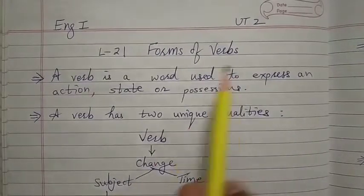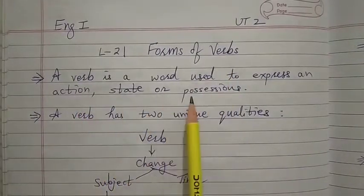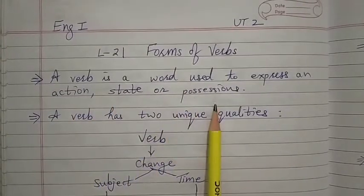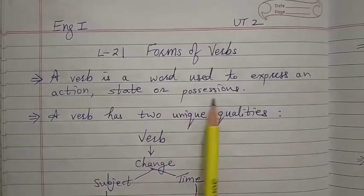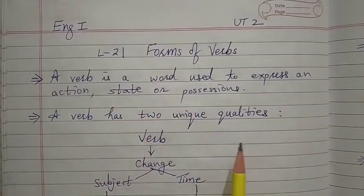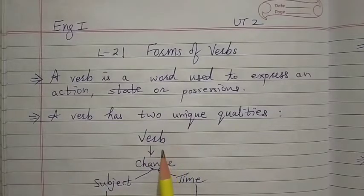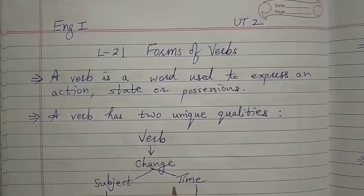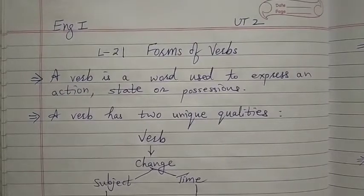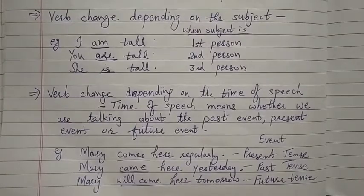What is a verb? A verb is a word used to express an action or state of possession. A verb has two unique qualities: a verb changes according to the subject, and a verb changes according to the time — meaning when the action was done, is done, or will be done.